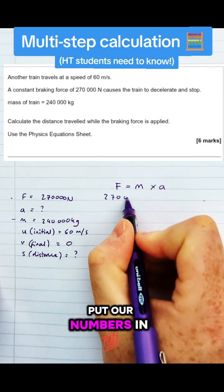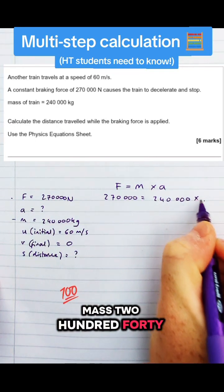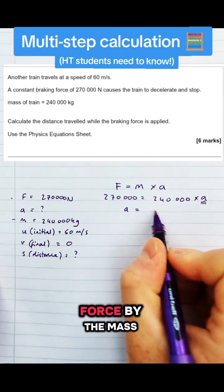If we put our numbers in, so 270,000 is equal to the mass 240,000 times by acceleration, all we've got to do to find the acceleration is divide the force by the mass.